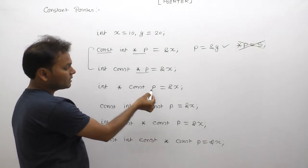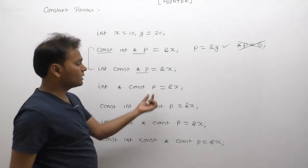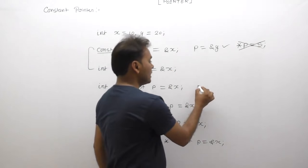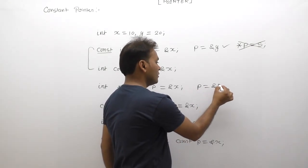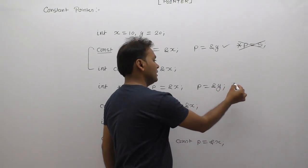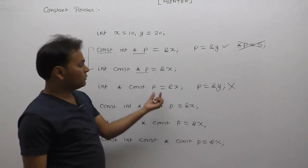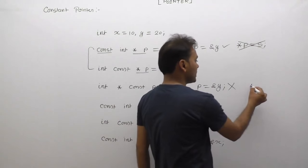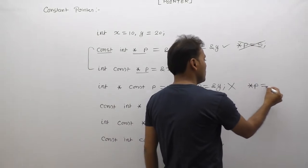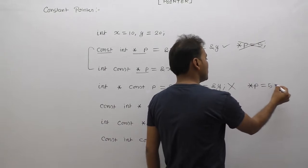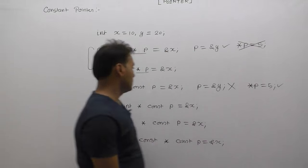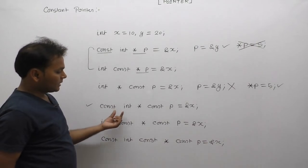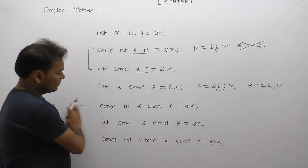In the third case, the const keyword is applied just before p, so the constant location concept applies to p, not star p. This means writing p equals address of y is an invalid operation — p is already constant, so it cannot be assigned another address. However, star p, meaning changing the value through star p, is a valid operation.